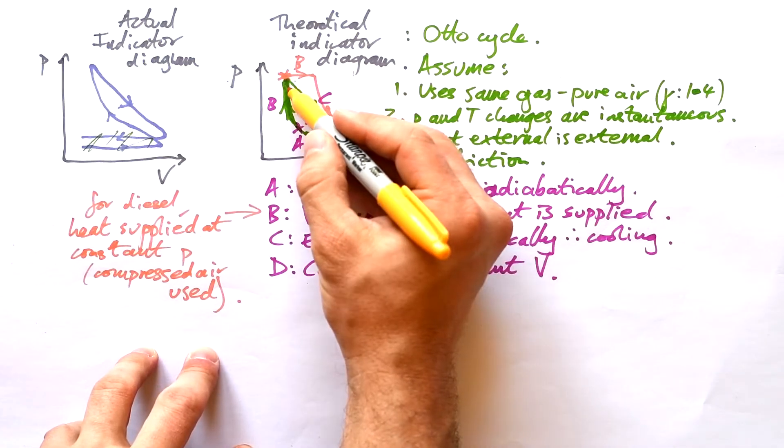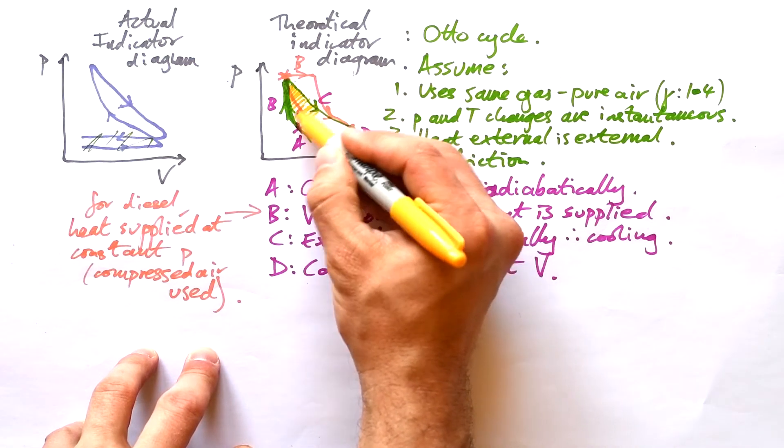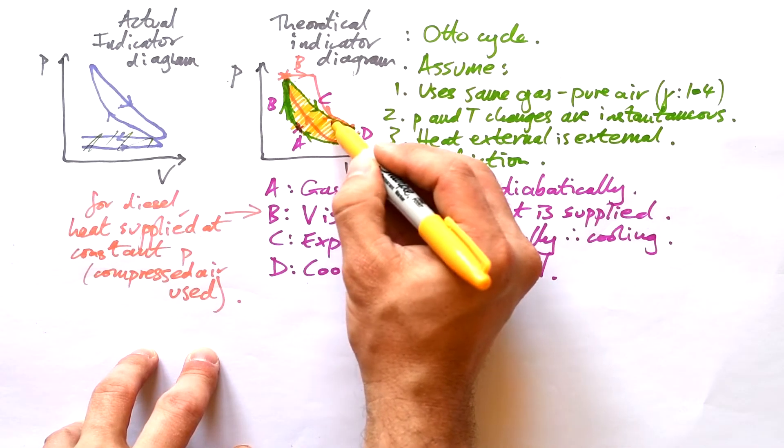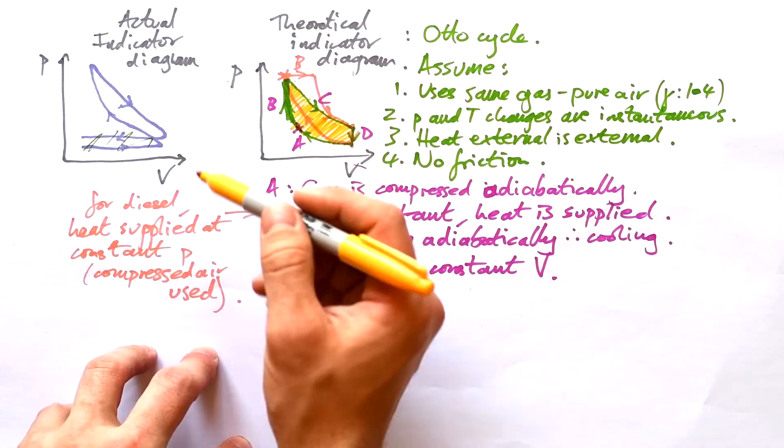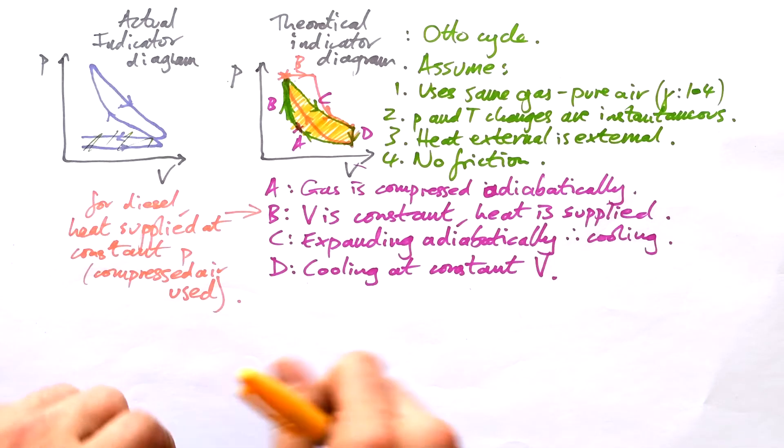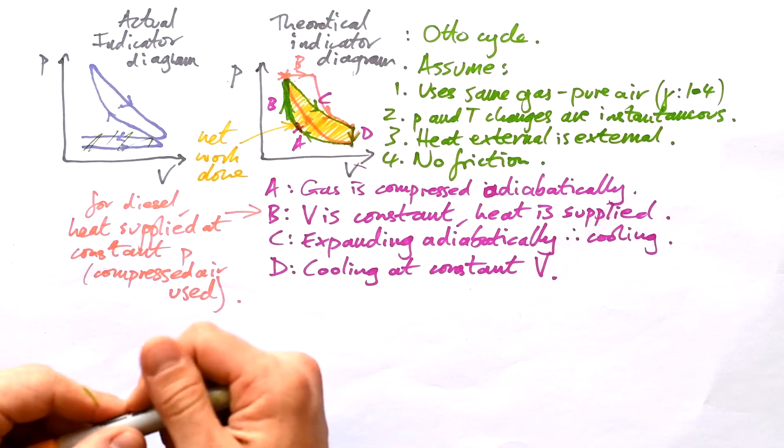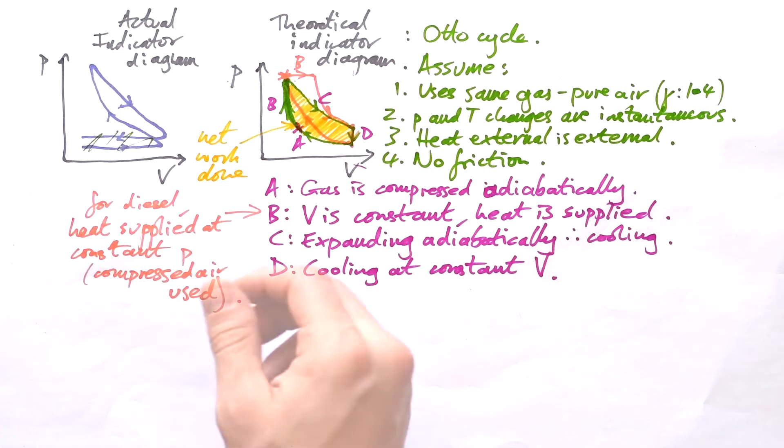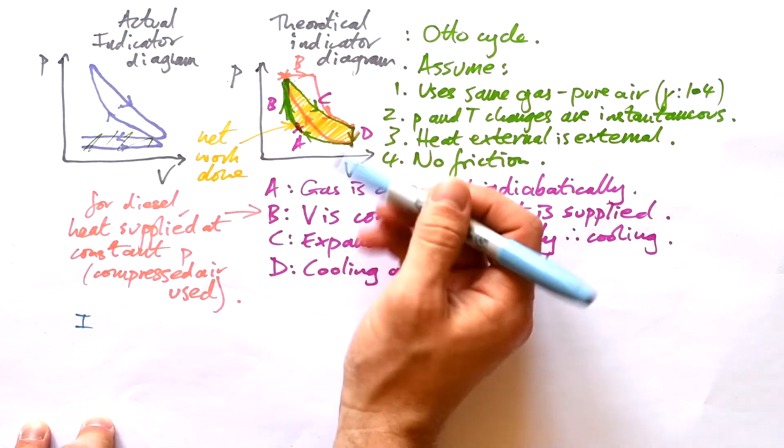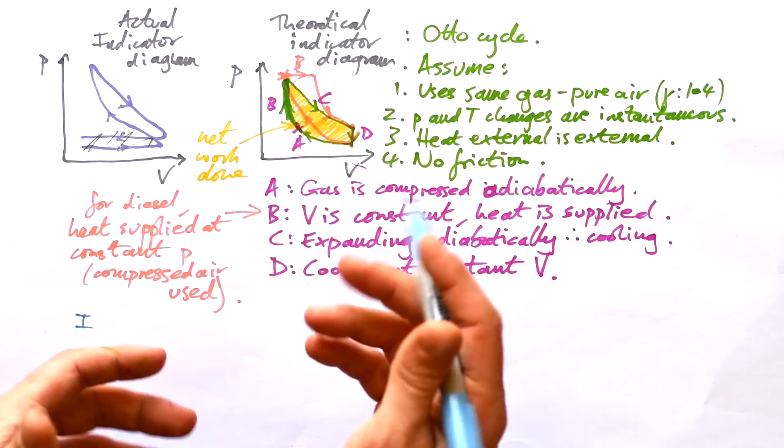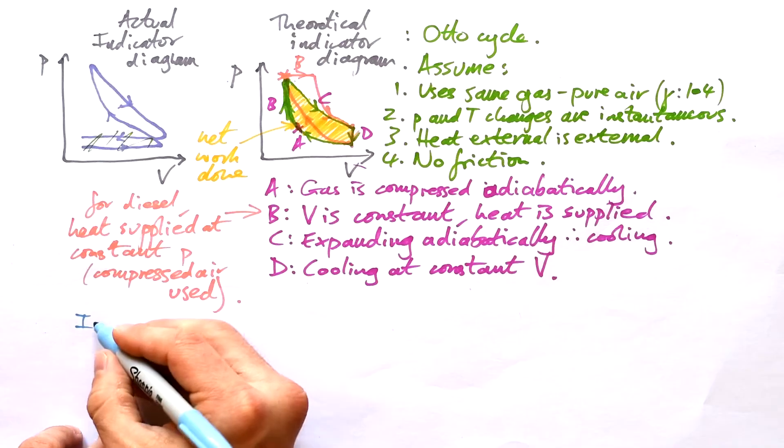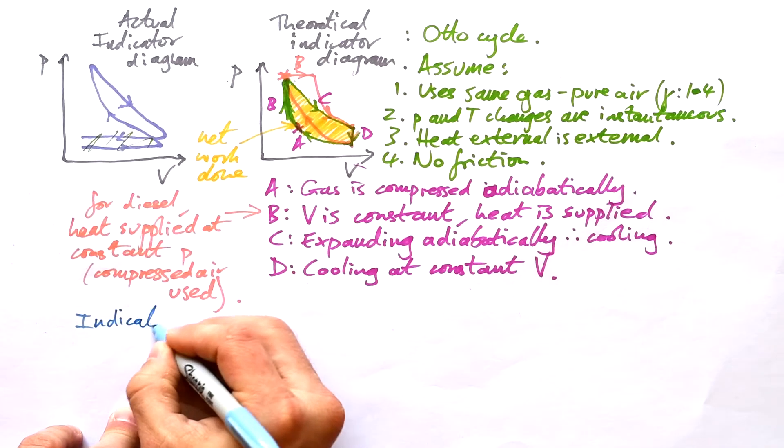Now, we said last time that the net work done by an engine is the area inside of the loop. And so that's one good reason to have an Otto cycle instead of an actual indicator diagram because it allows us to easily approximate what the net work is going to be. So that's the energy that is supplied to your car, which then makes it move. And so because it's not perfect, we call it indicated power. Now, when it comes to power, because this is a loop and it's constantly going around and round and round, we're not really concerned with how much work is done by one loop. We're concerned with how fast it does work or, in other words, the power.